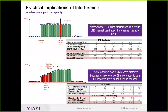To illustrate resource block impact: LTE's 180 kHz resource blocks are more robust than other wideband signals. If only one resource block is impacted by interference, you lose about 4% capacity in a 5 MHz channel. If seven resource blocks are impacted, you can lose up to 28% of capacity. This gives a rough measure of how interference translates directly into capacity loss.